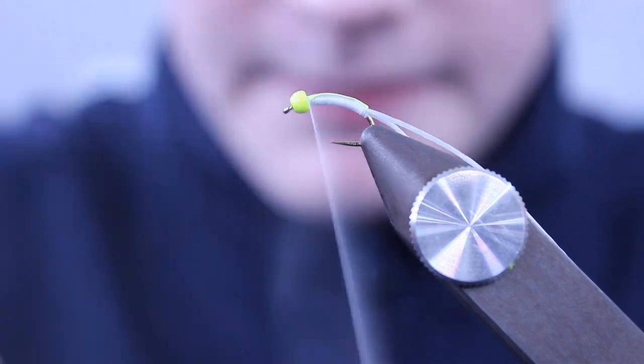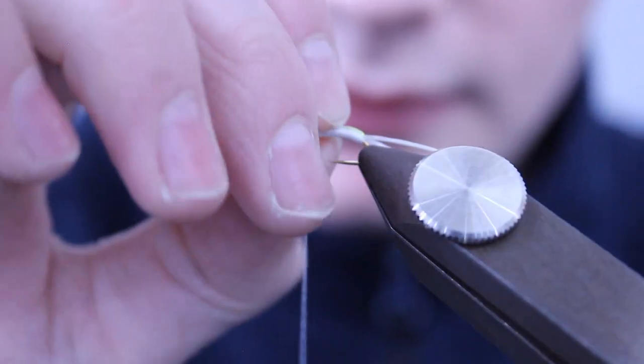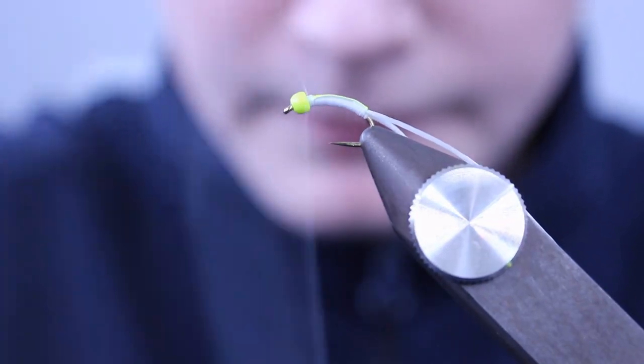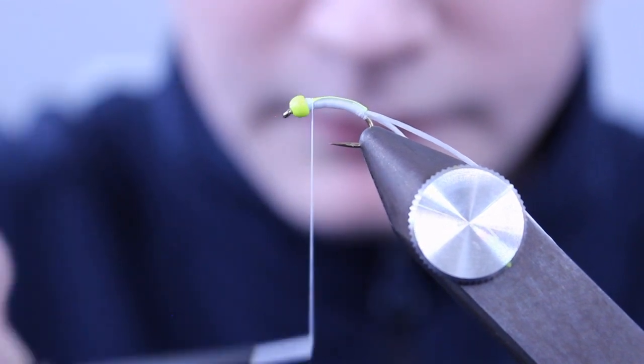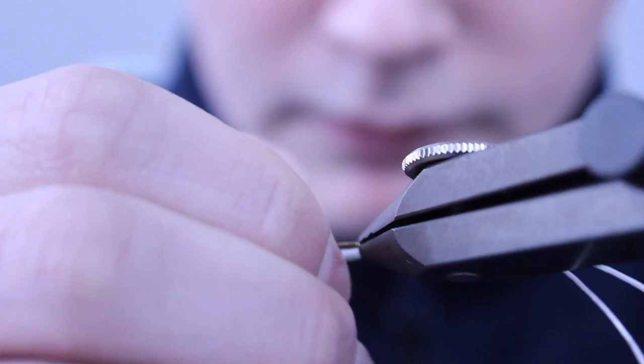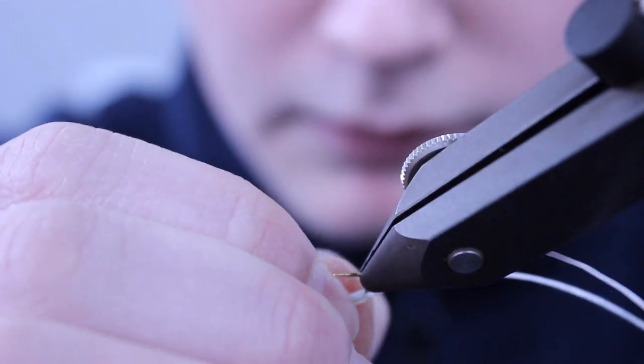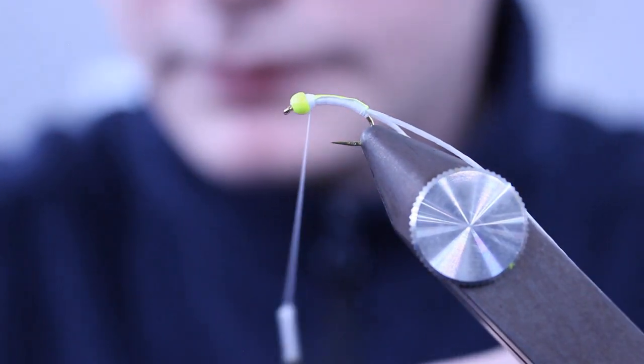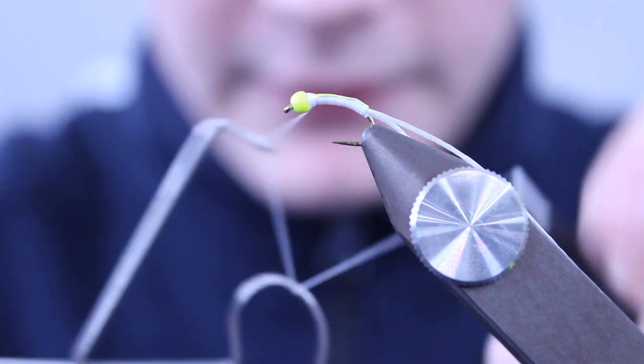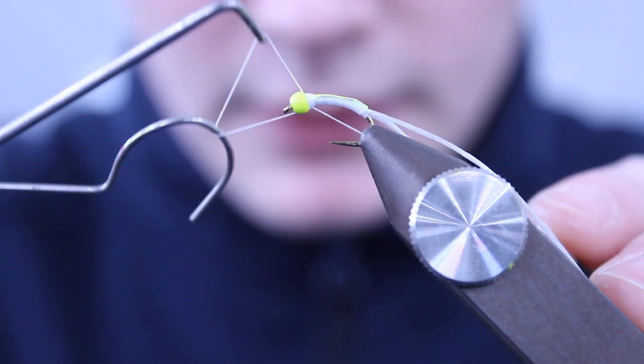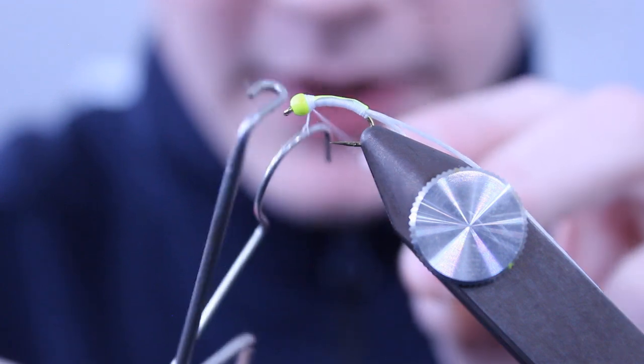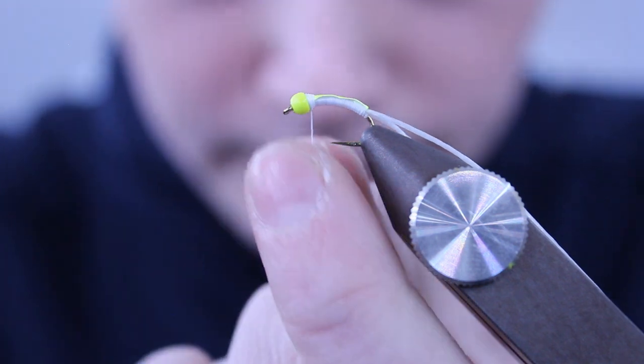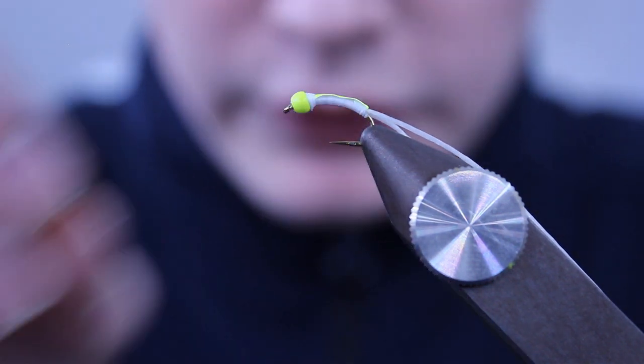All that's left to do is build up a head at the back of the fly. Take your whip finish tool and put a three-turn whip finish in at the back of the bead. Pull it tight and trim away your floss.